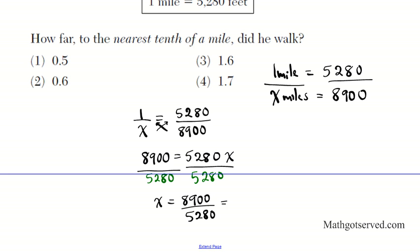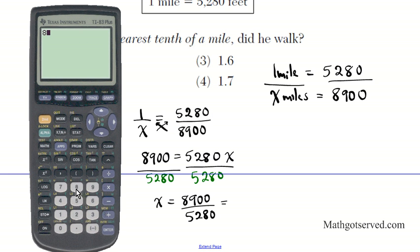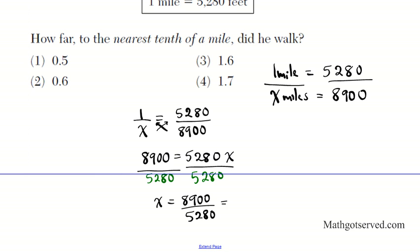So 8,900 divided by 5,280 equals 1.6856. So it's approximately 1.6856. We're going to round this to the tenth place. So where is the tenth place? This is the tenth place, right after the ones place.